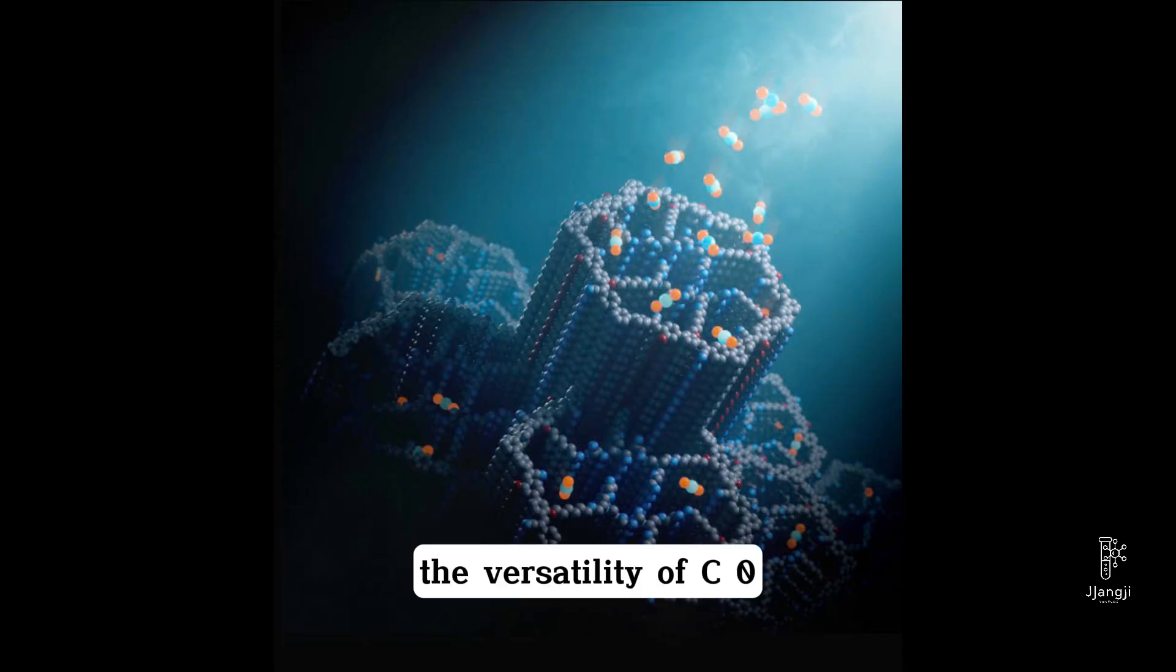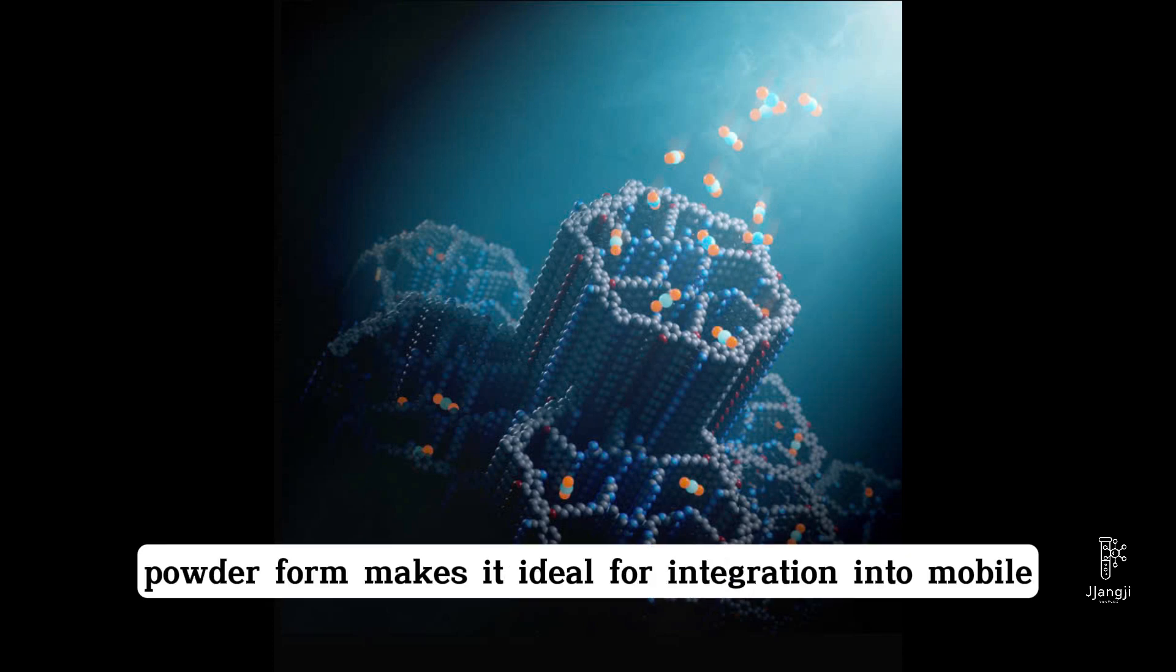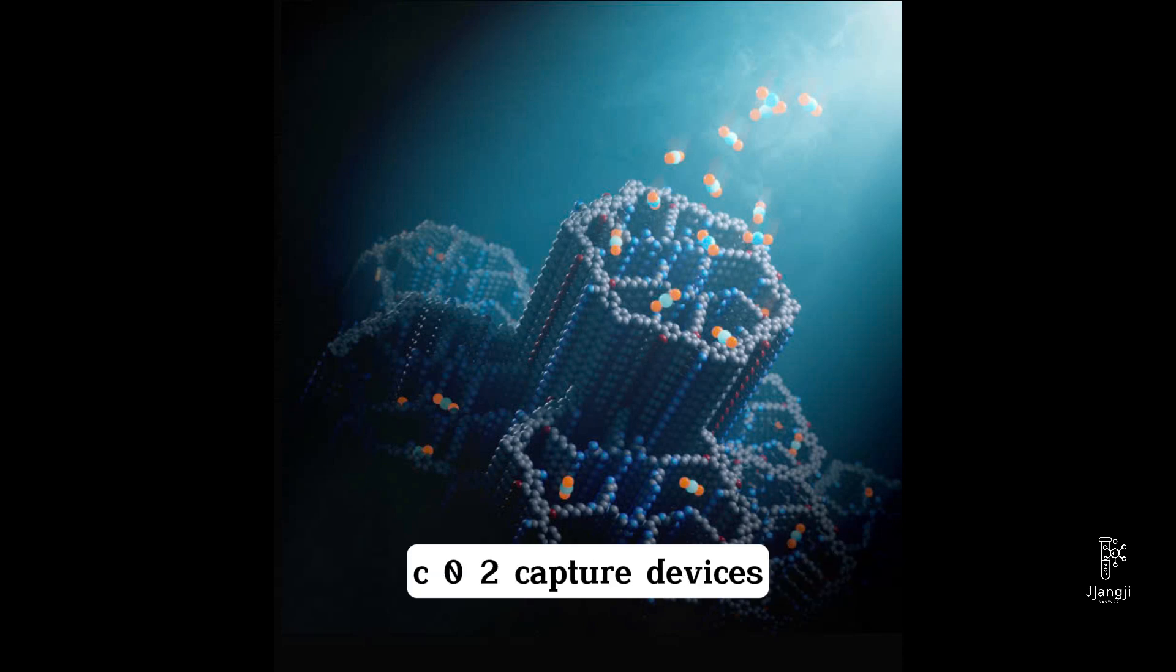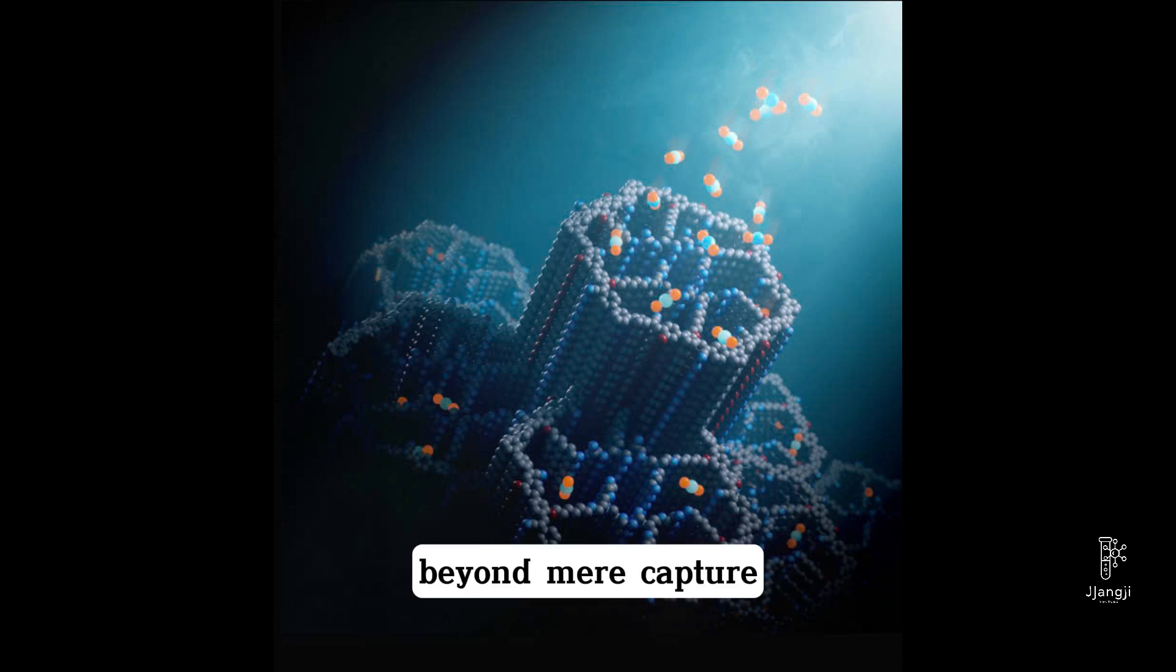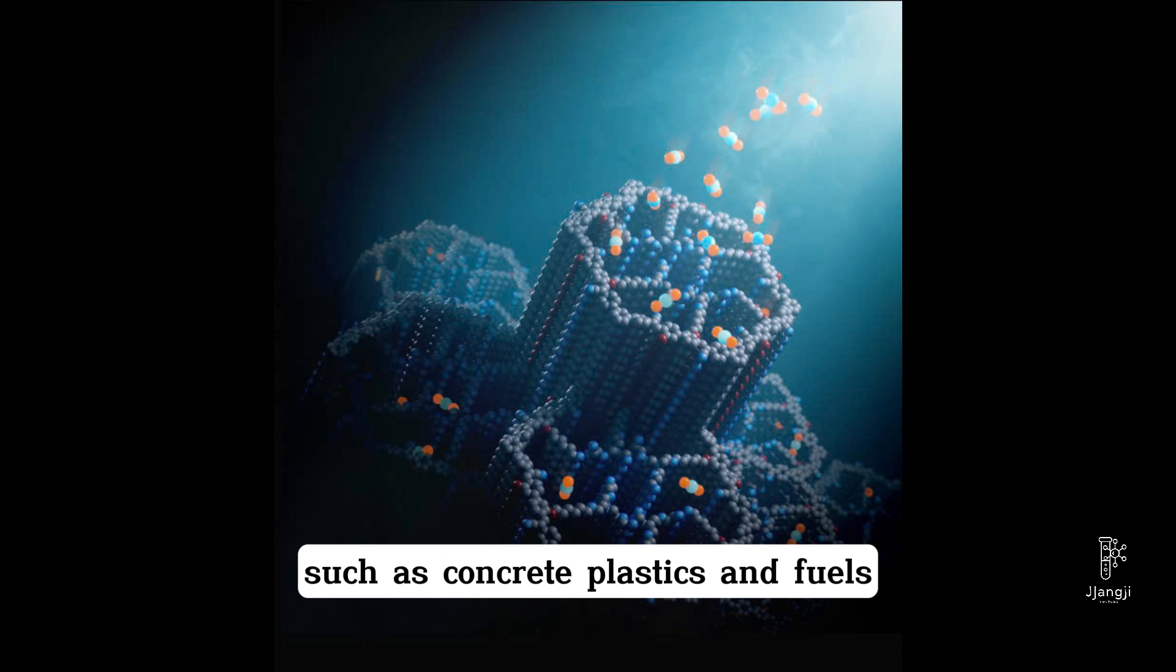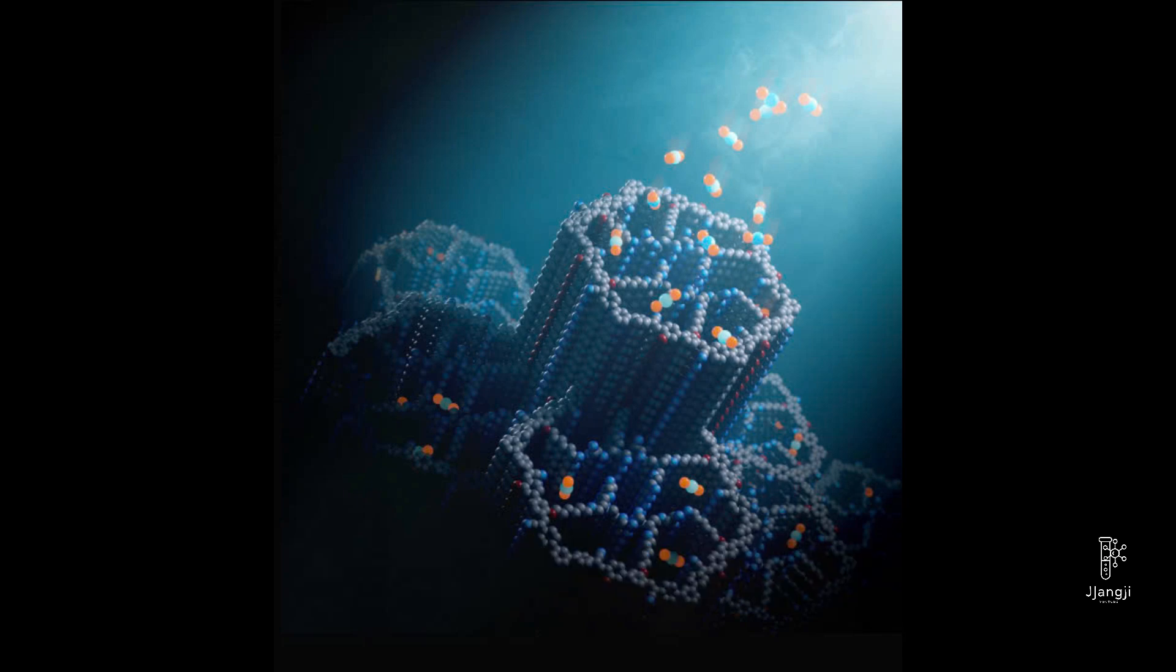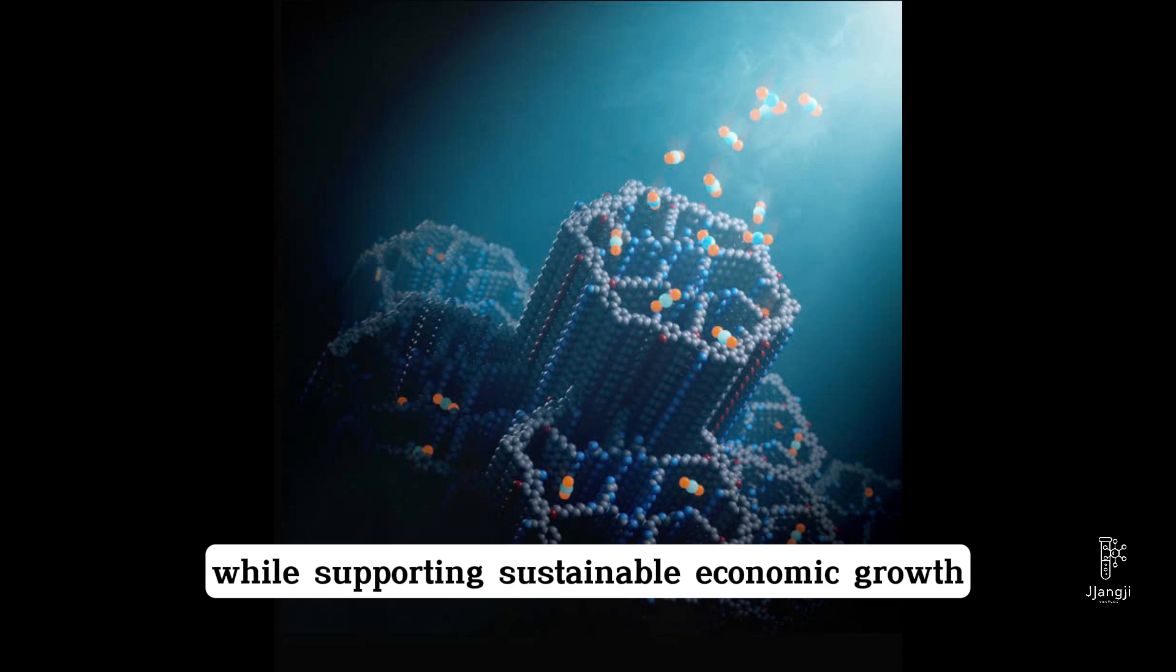The versatility of COF-999 opens up a wide array of practical uses. Its nanoscale powder form makes it ideal for integration into mobile CO2 capture devices, industrial air filters, and large-scale facilities. Beyond mere capture, the CO2 collected by COF-999 can be recycled into valuable industrial resources such as concrete, plastics, and fuels, contributing to the circular carbon economy. This dual function of capture and utilization highlights COF-999's potential to revolutionize industrial operations and reduce global carbon emissions while supporting sustainable economic growth.